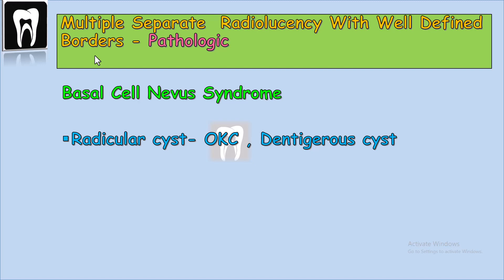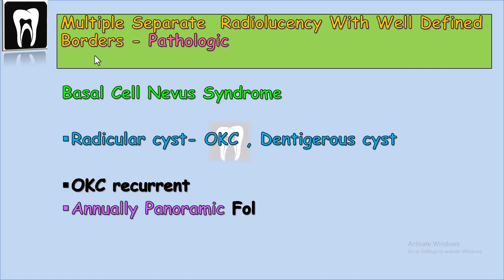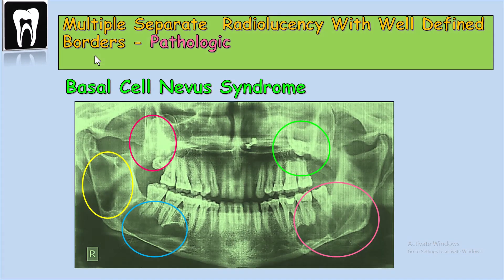Basal cell nevus syndrome is mostly diagnosed in childhood. If the cysts are OKC, they are more likely to be recurrent. So after surgery and removal of the multiple OKCs, the patient needs to be followed annually with panoramic x-rays. In this panoramic, we can see multiple cysts in both jaws. The cysts can be multilocular or unilocular.